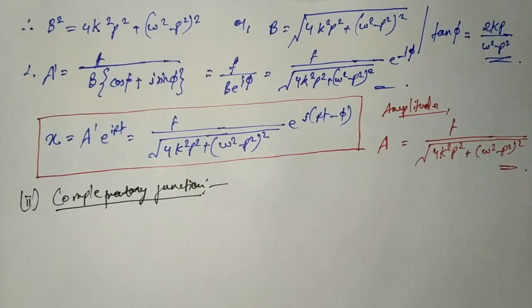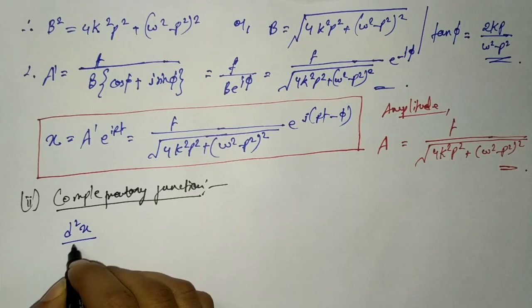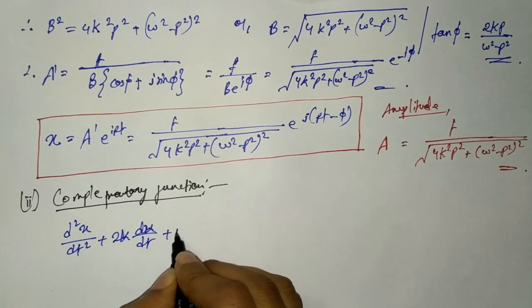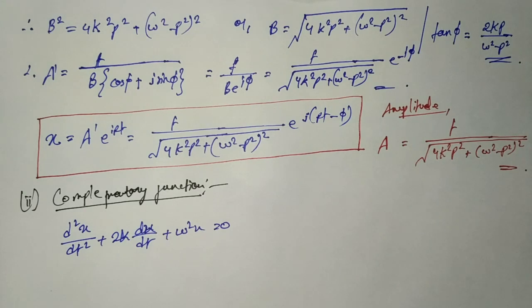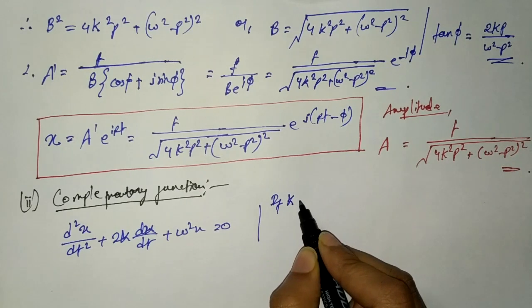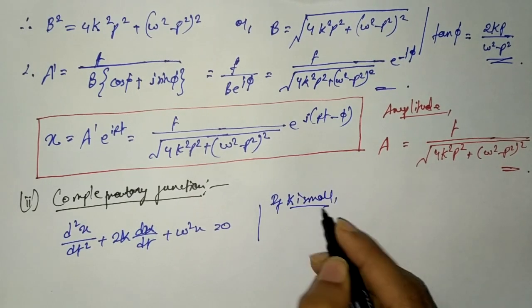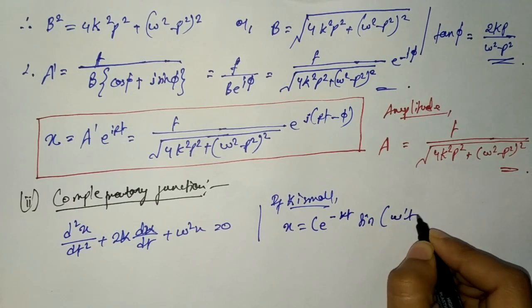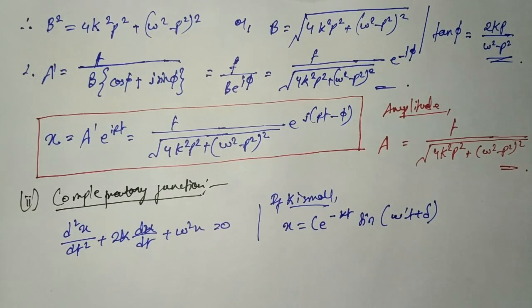The complementary function is obtained by putting the right-hand side of the equation equal to zero: d²x/dt² + 2k(dx/dt) + ω²x = 0. When the damping constant k is small, the solution of this equation is the equation of damped oscillatory motion. If k is small, then x = C·e^(−kt)·sin(ω't + δ), where C and δ are two constants depending on the initial conditions.